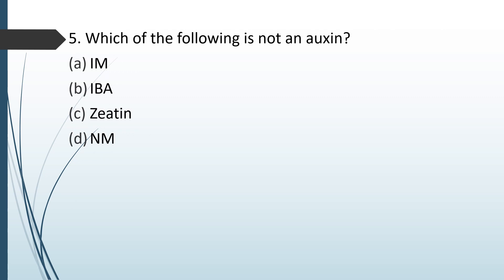Which of the following is not an auxin? IAA, IBA, zeatin, or NAA. The correct answer is option C — zeatin is not an auxin.